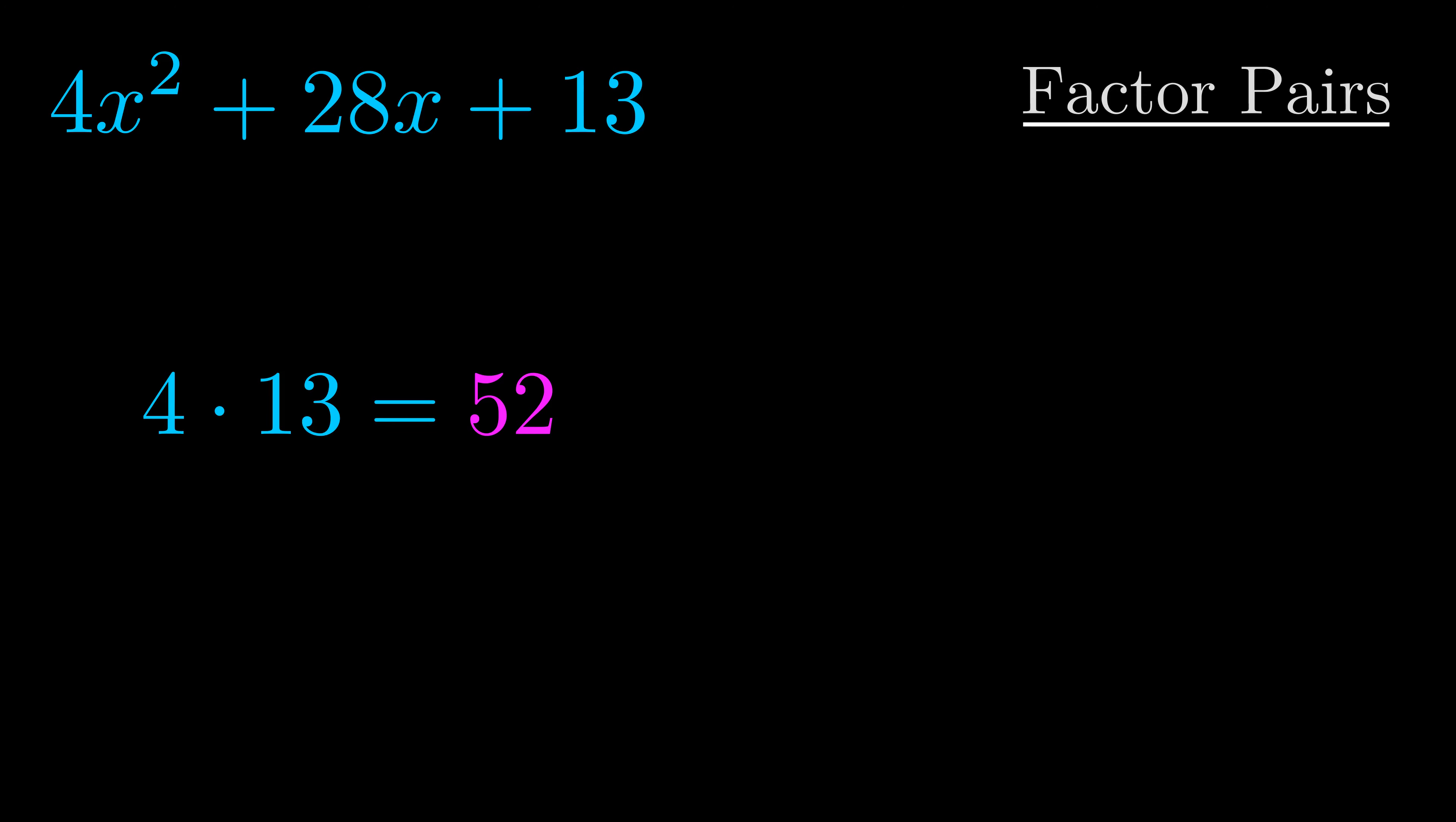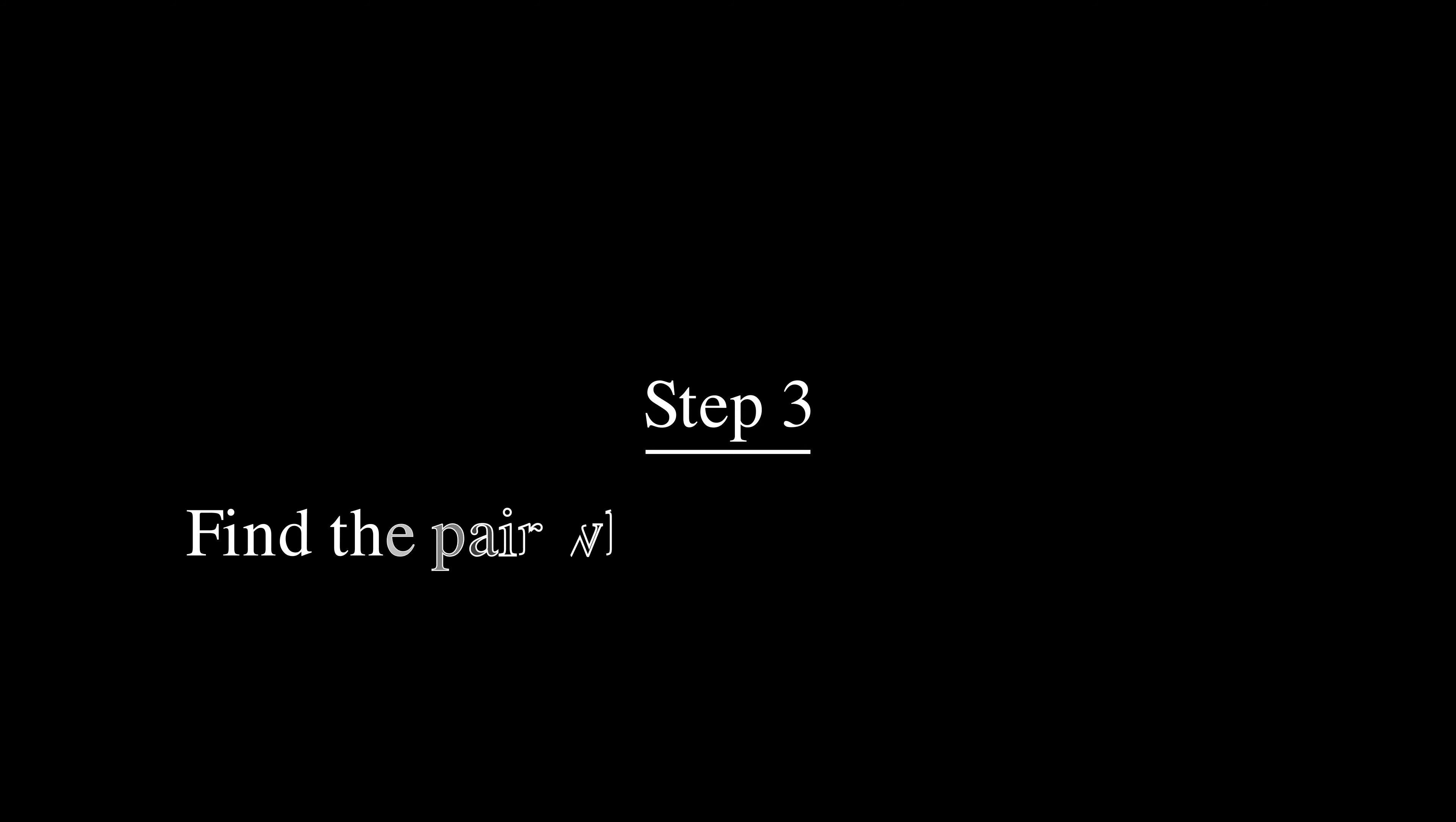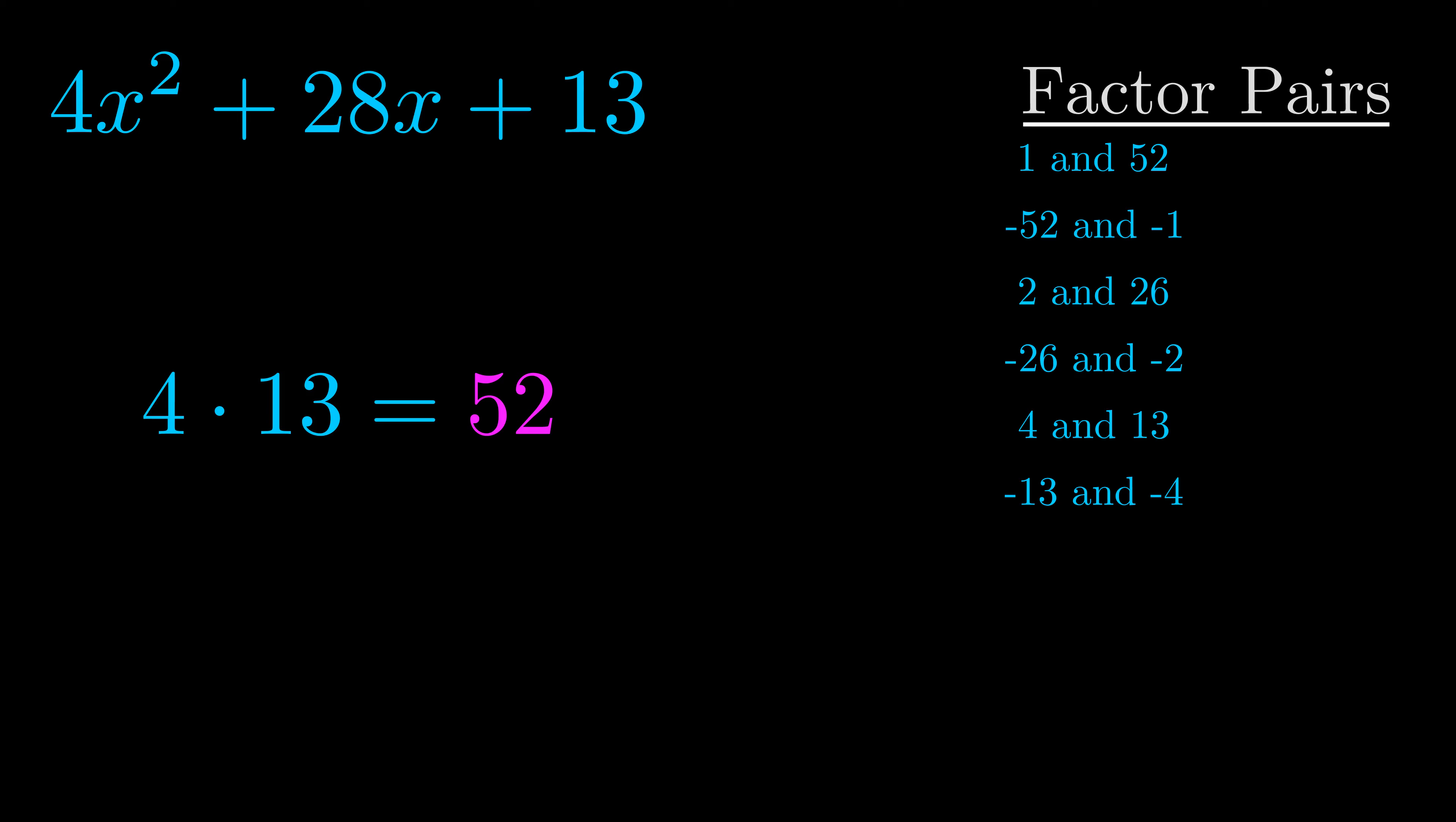Okay, here's what I came up with. Now once you have these factor pairs, the goal is to find which of these pairs adds to the b value. The b value is the coefficient on the x term. That's the middle term, the one that we haven't done anything with yet. And really this is the only factor pair that we need.